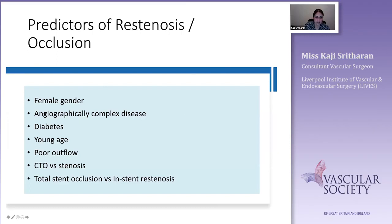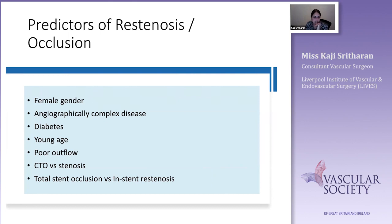Female gender is a risk factor for re-stenosis due to smaller iliac vessels. I'd be very cautious about putting a 5mm stent into a 5mm external iliac — the better route is to oversize with a covered stent using a crack-and-pave technique. Other predictors of re-stenosis include diabetes, young age, poor outflow, and CTO versus stenotic disease.